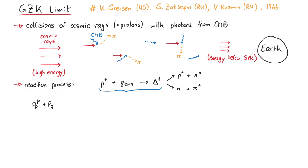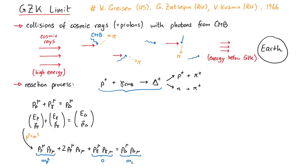During this collision, 4-momentum must be conserved, which looks like this. If we square this relation, we can make use of the fact that the squared 4-momentum yields the mass of the corresponding particle. So the proton mass here, zero for the photon mass here, and on the right-hand side the delta mass.